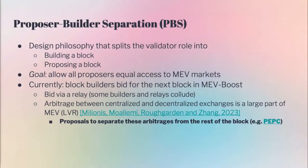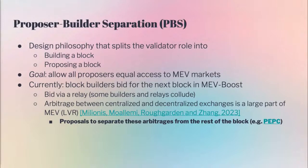The goal of PBS would be to allow all proposers to have equal access to MEV markets. Currently, PBS is in the form of MVV Boost, and people bid via a trusted relay that then forwards their bid to some proposer. Some builders and relays might collude, meaning there are latency advantages that you can achieve that others might not, which might defeat some of the goals of PBS. We also see that arbitrage between decentralized and centralized exchanges is a large part of the MEV that can be extracted, formalized by Jason in the Lever papers.